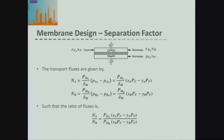Going back to our actual definition of the fluxes, we can write that for each of our two components. For a gas membrane separator, our fluxes are permeability over the thickness of the membrane times the difference in partial pressure, where partial pressure is given by the mole fraction times the total pressure. Taking the ratio of these two flux equations gives us a term for the ratio of the fluxes in terms of the permeabilities of the two components and the difference in mole fractions multiplied by the feed pressure and permeate pressure.